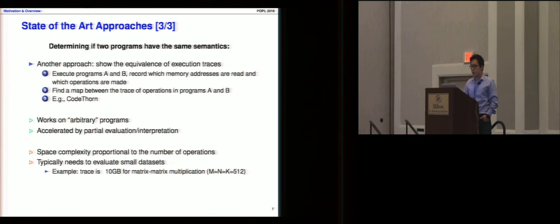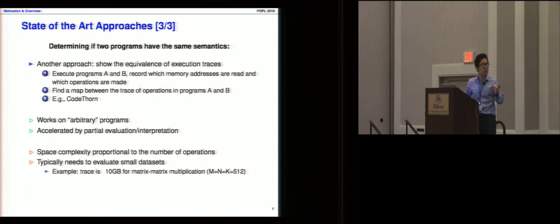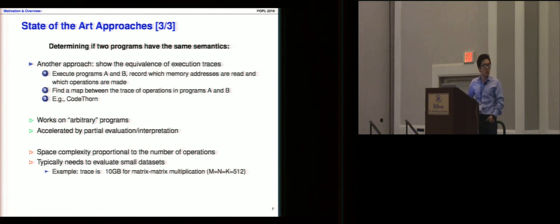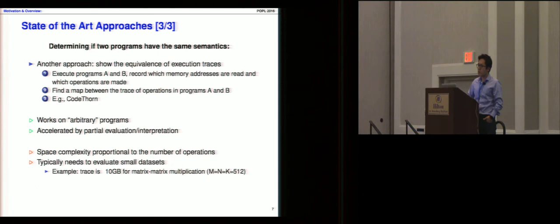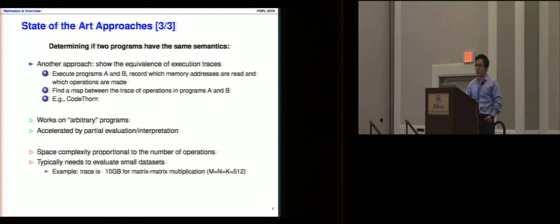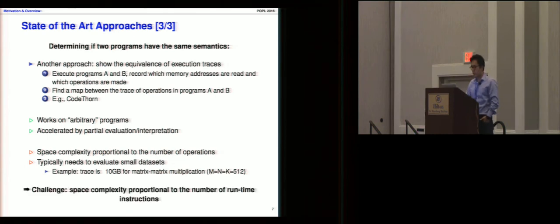The third approach checks the equivalence of the execution trace: you execute two programs, record their memory read/write addresses and operations, and find a map between the two operation traces. An example is the Codeone tool developed by Dr. Skorland in 2014, which works on arbitrary programs and can be accelerated. However, the problem is space complexity — for a simple matrix multiplication of a very small size, the trace can be up to 10 gigabytes, which is huge.